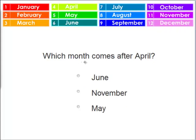Which month comes after April? Is it June, November, or May? Right after April — here's April — comes May.